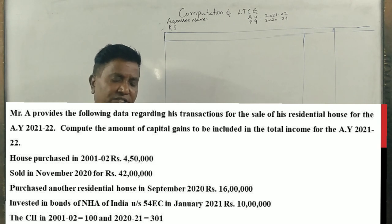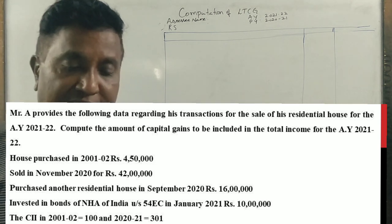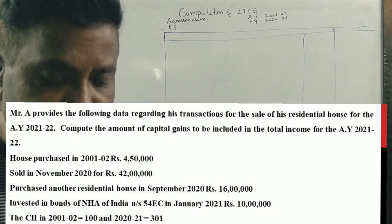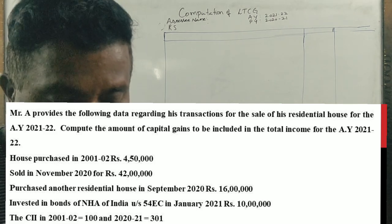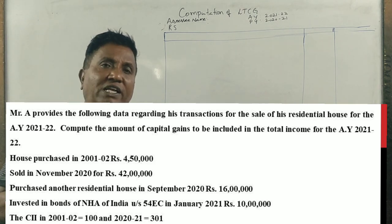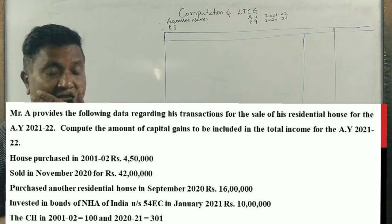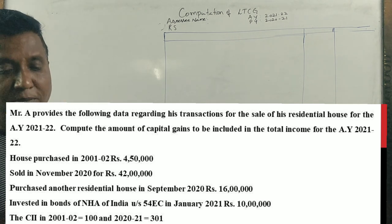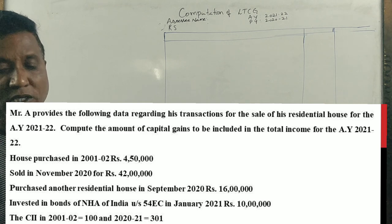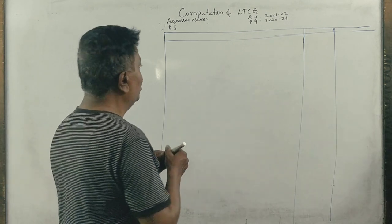The cost of inflation index for 2001-02 is 100 and 2020-21 is 301. Very simple question. So what we can say is the house was purchased in 2001-02 for 4,50,000 rupees and sold in November 2020 for 42 lakhs.